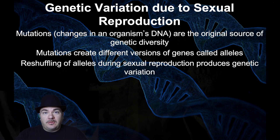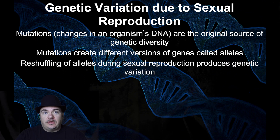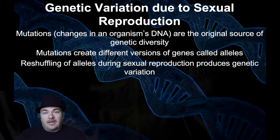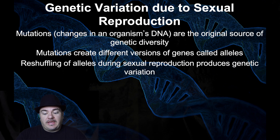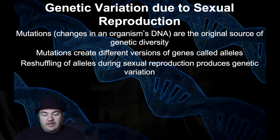In sexually reproducing organisms — for example, humans — we have a lot of genetic variation and genetic diversity. You are not exactly the same as your parents. Unless you have an identical twin, you're not genetically the same as your siblings. Where does this genetic variation come from, from one generation to the next, through sexual reproduction? The original source of genetic variation, though, is mutations — changes in an organism's DNA — and that's the original source of genetic diversity.